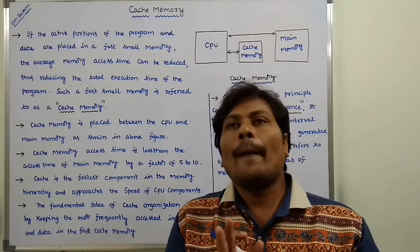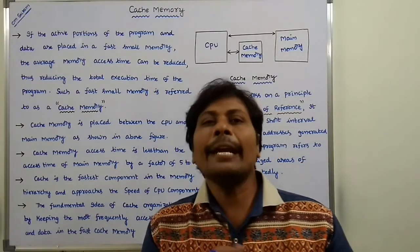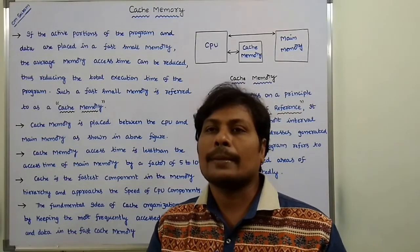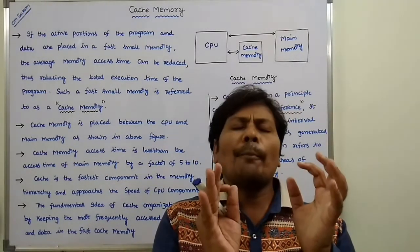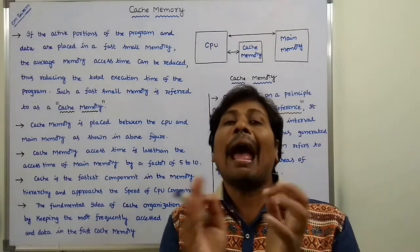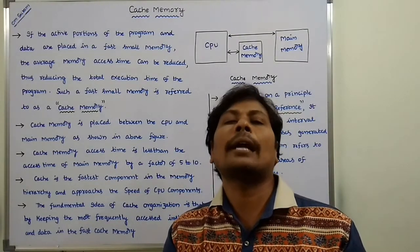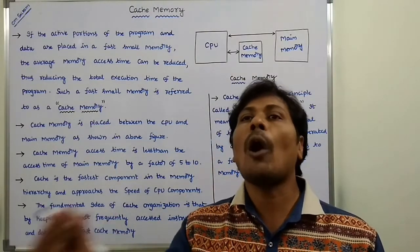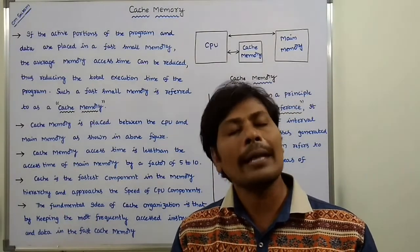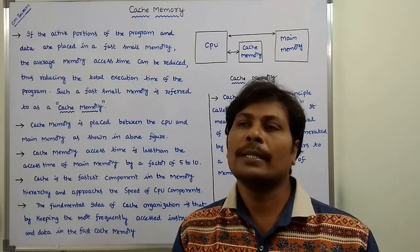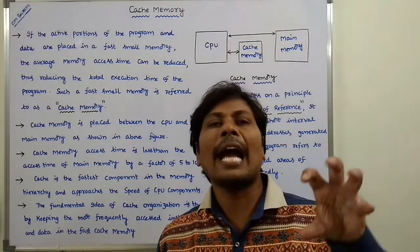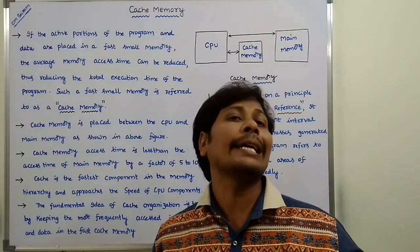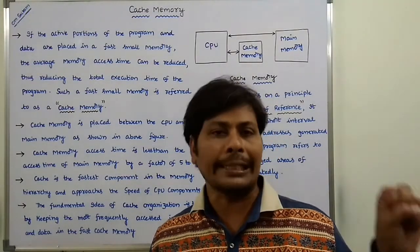The fundamental idea of cache memory organization is that the most frequently accessed instructions and data are placed in a fast and small memory called cache memory. That means cache memory holds the most frequently accessed instructions and data.